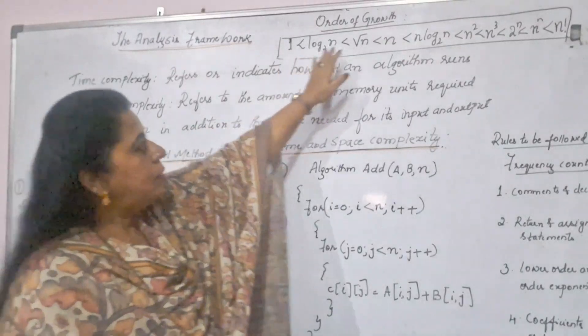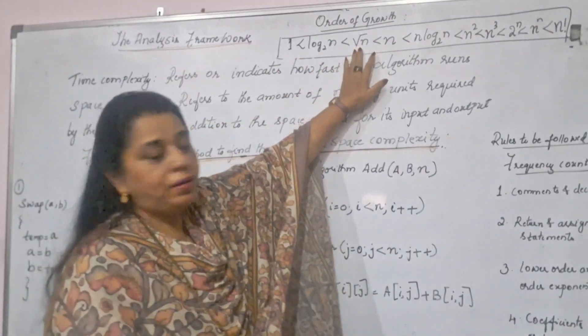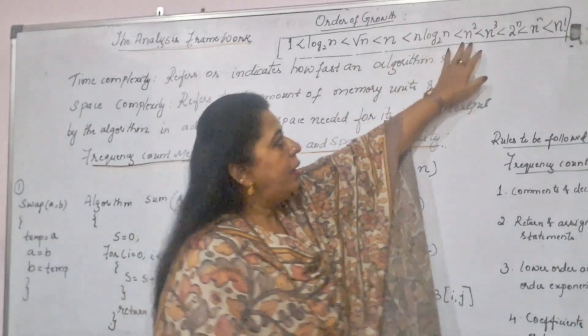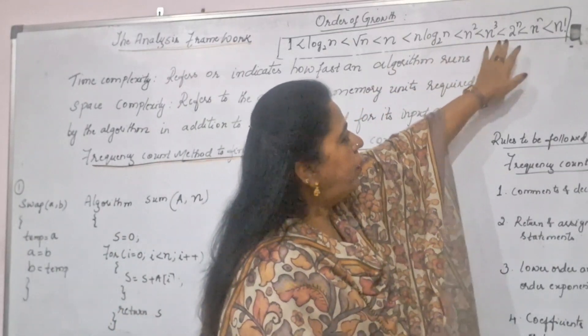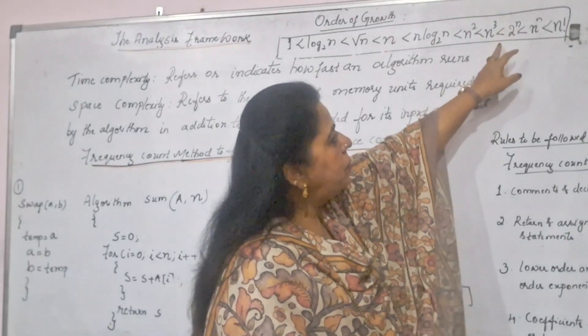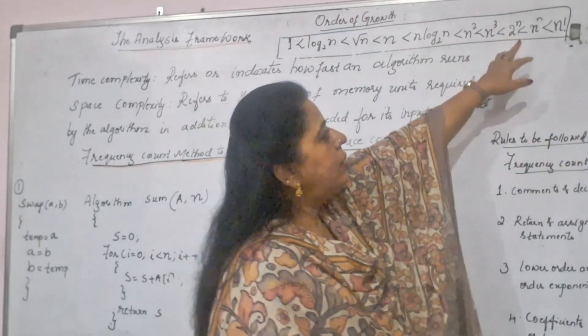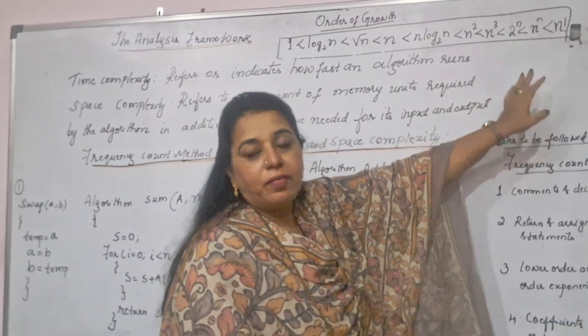Then you have log to the base 2 n, followed by root n. Then n, n log to the base 2 n, n square, n cube, n to the power of 4 like this up to 2 to the power of n. Then 2 to the power of n, after that you may have 3 to the power of n, 4 to the power of n. Then n to the power of n. Finally, n factorial.